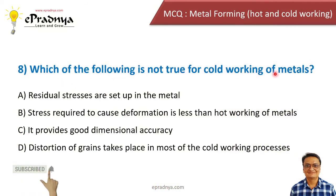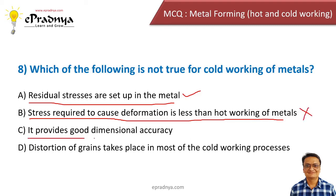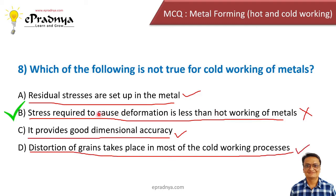Eighth MCQ: Which of the following is not true for cold working of metals? Options are: residual stresses are set up in the metal — true; stress required to cause deformation is less than in hot working — this is not correct, because the stress required for cold working is higher than for hot working; it provides good dimensional accuracy — correct; and distortion of grains takes place — also correct. So the answer is 'stress required is less than hot working,' as that statement is false.